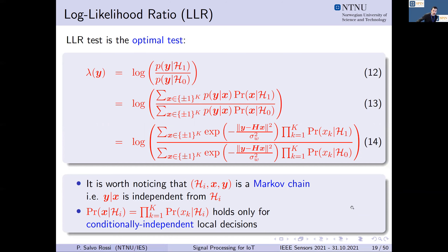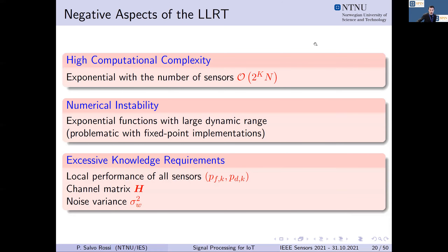However, despite providing the optimal processing, this equation has three main problems. First, high computational complexity that is exponential with the number of sensors K. Second, numerical instability because it involves exponential functions with very large dynamic range that can cause issues in fixed-point implementations. Third, excessive knowledge requirements — to compute that quantity we need to know local performance of all sensors, the channel state information matrix H, and the noise variance or SNR on the reporting channel.